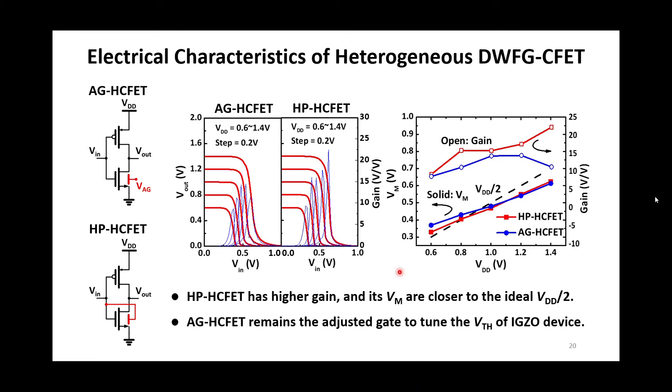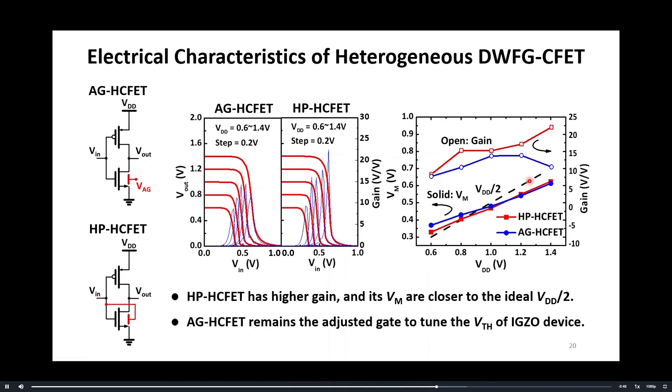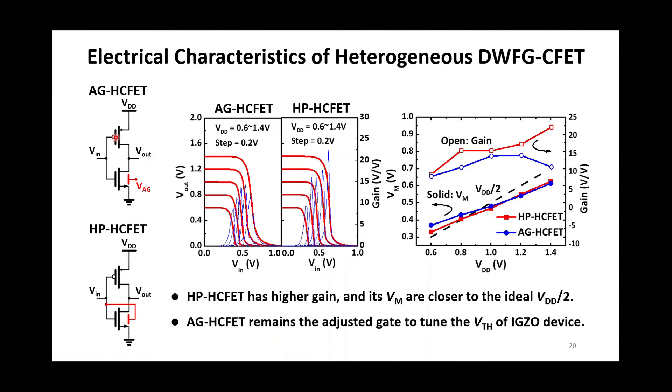The next part discusses two kinds of HC-FET inverter characteristics. The IGZO in adjusted gate HC-FET and high-performance HC-FET is bottom gate and double gate respectively. HP HC-FET has higher gain and its threshold voltage are closer to the ideal half VDD, owing to the symmetry performance of N-MOS and P-MOS obtained by the better IGZO performance. On the other hand, AG HC-FET remains the adjusted gate to tune the threshold voltage of IGZO device.